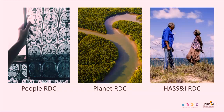The Australian Research Data Commons is both the name of the organization I work for and the place we're trying to build. Like suburbs in a city, we have specific suburbs we're building out: the People Research Data Commons, the Planet Research Data Commons, and the Humanities Arts Social Sciences and Indigenous Research Data Commons — which I'll call the HASS and IRDC from here on.